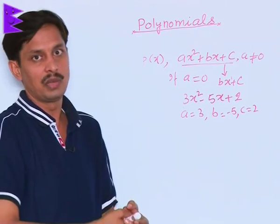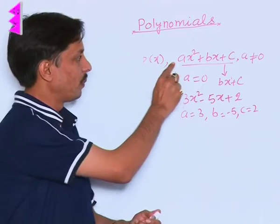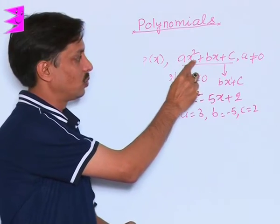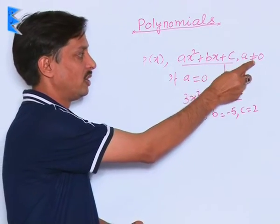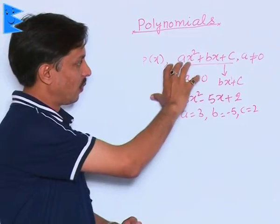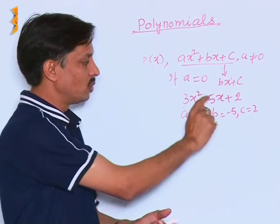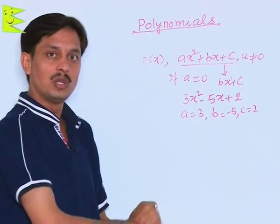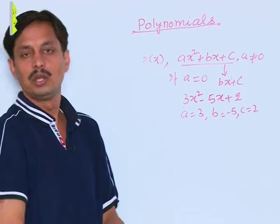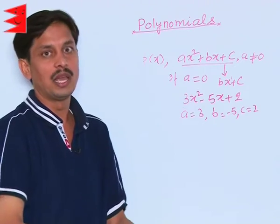So, ultimately what is coming out? That quadratic polynomial is in the form of A x square plus B x plus C, provided A is not equal to 0. We can find the A, B, C from given example. The condition is A should not be equal to 0. B may be 0 and C may be 0, and it has two zeros which we will calculate later.